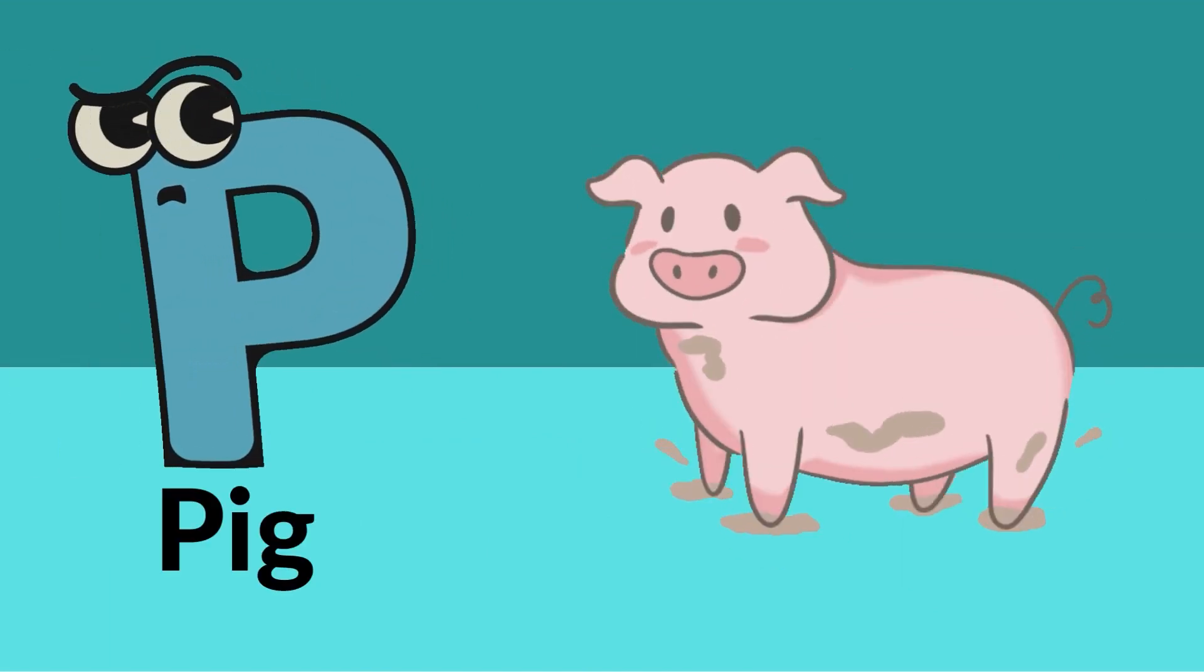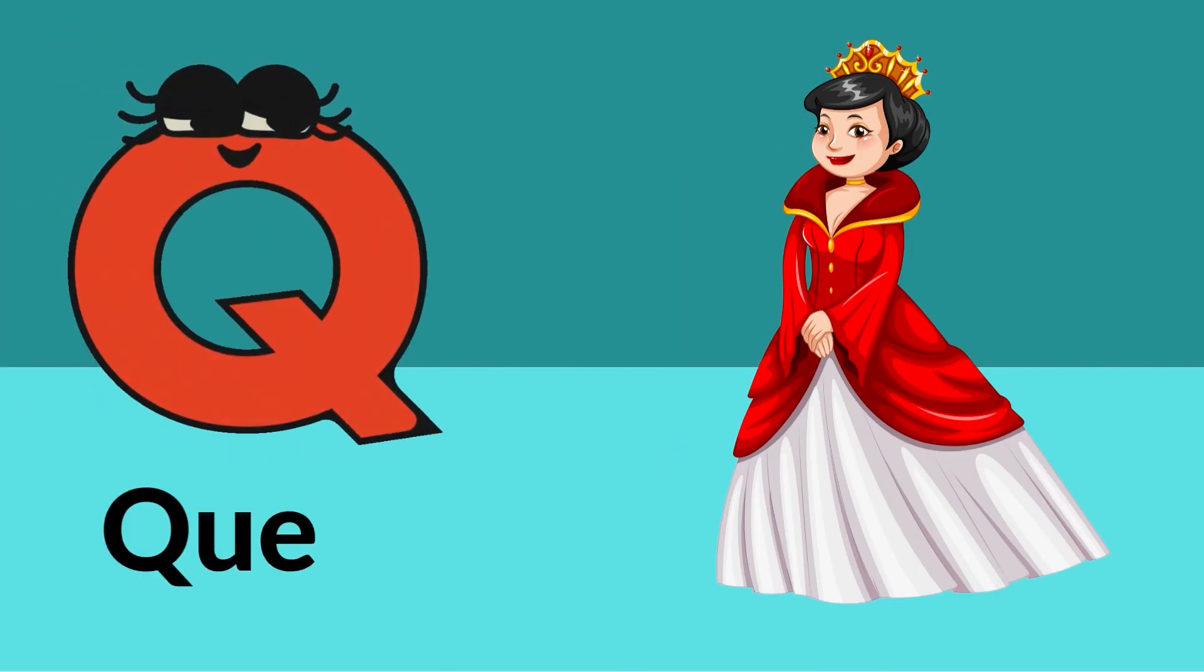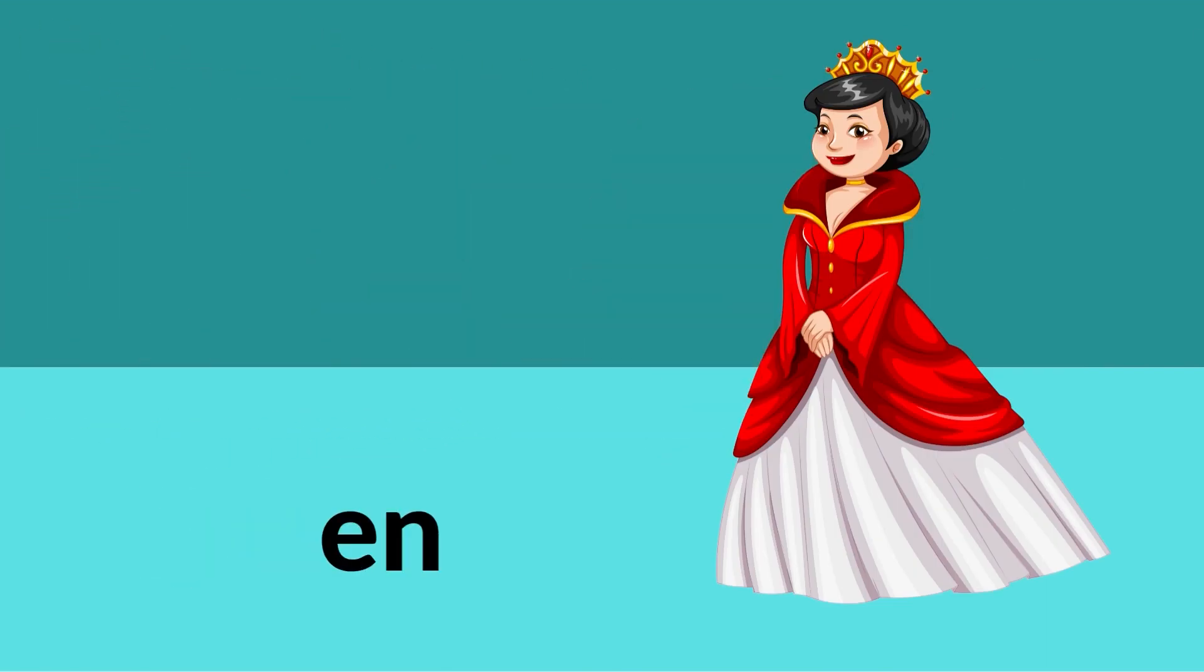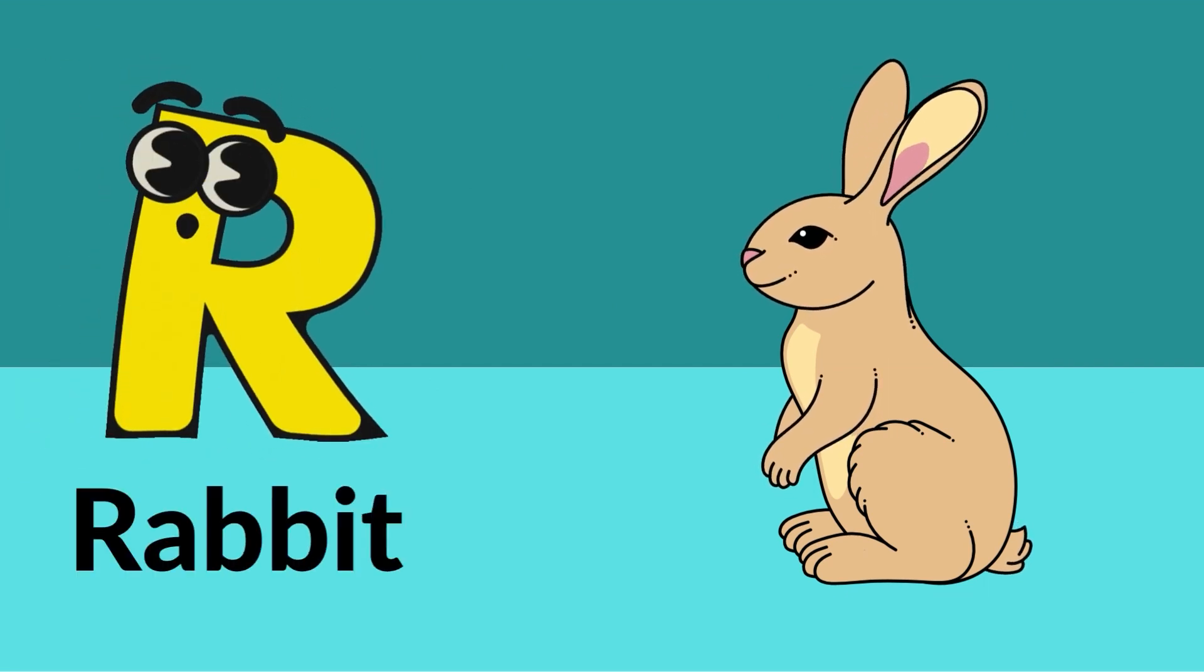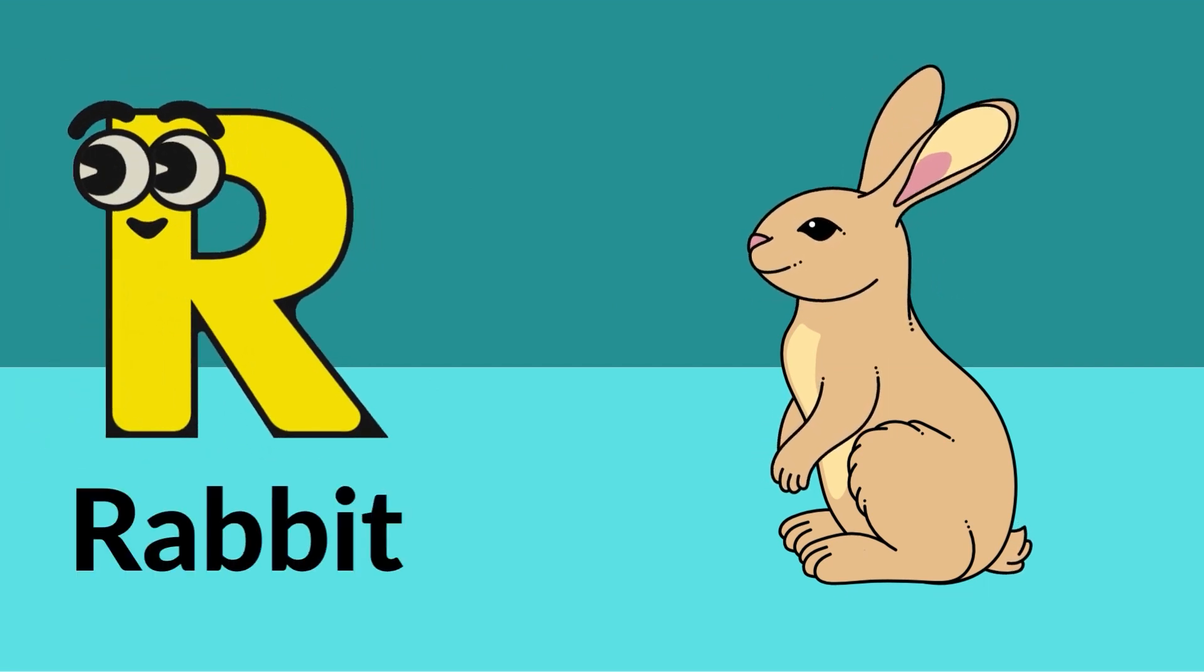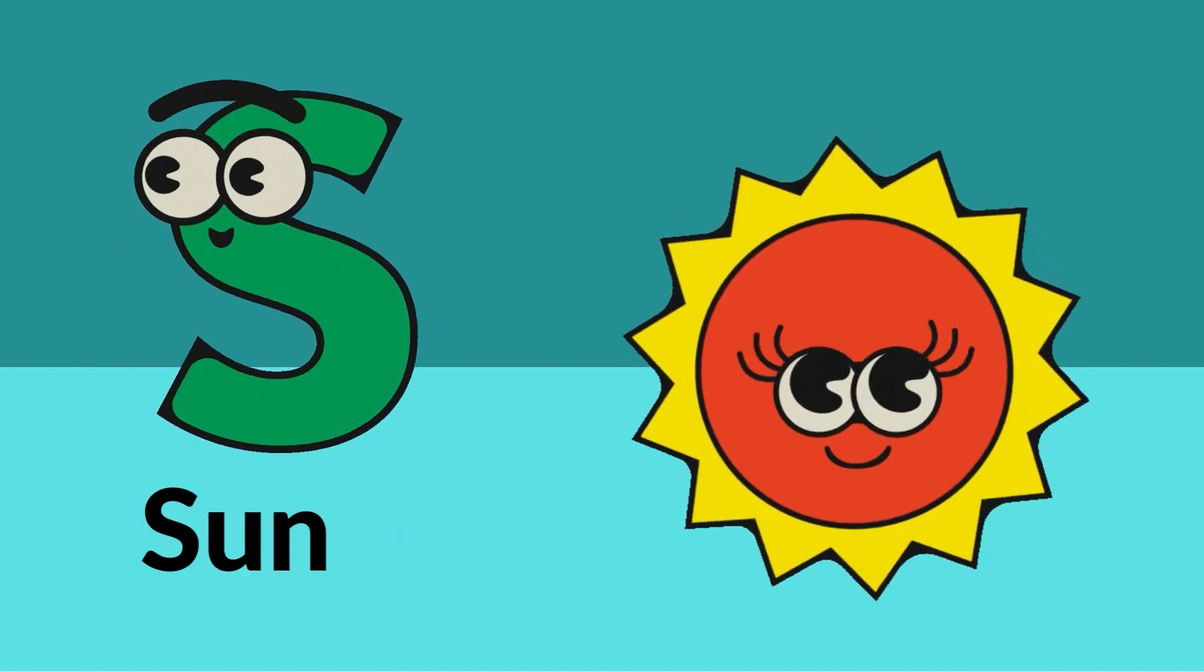Q is for queen, R is for rabbit, S is for sun.